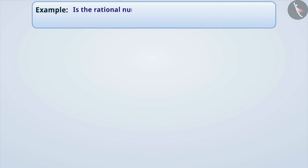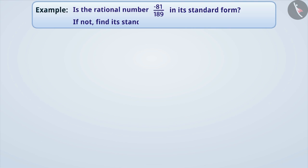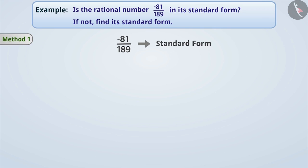Is the rational number minus 81 by 189 in its standard form? If not, find its standard form. Here we have to express the given number in its standard form. Can you tell me what is the standard form of a rational number?